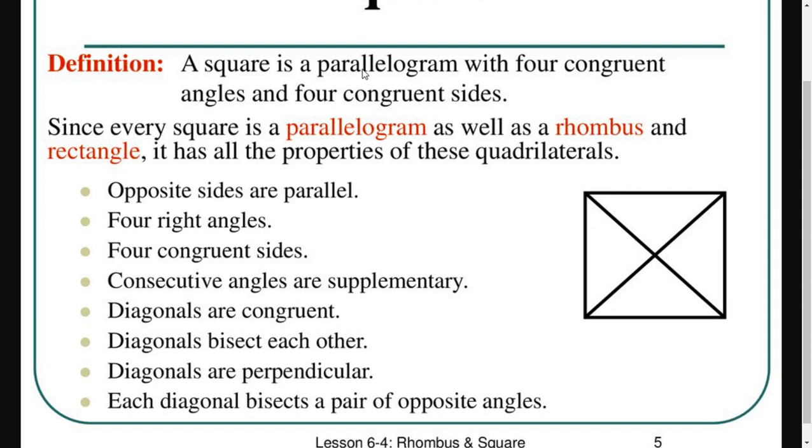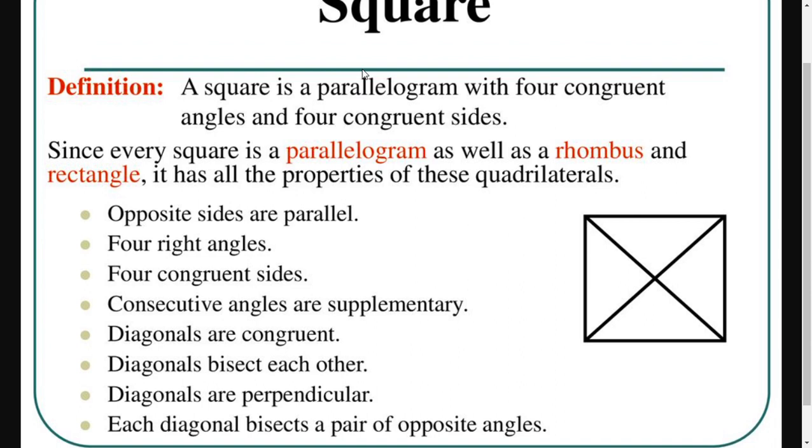Opposite sides are parallel, four right angles, four congruent sides. Consecutive angles are supplementary, and diagonals are congruent.